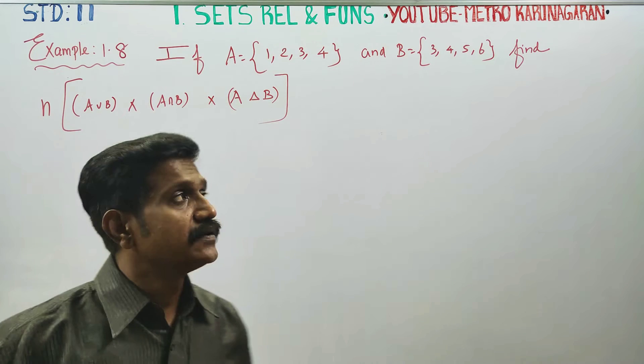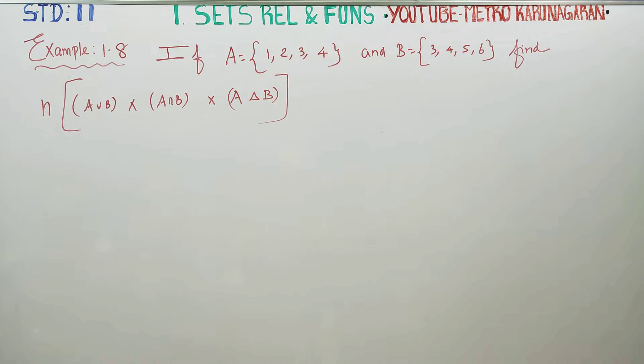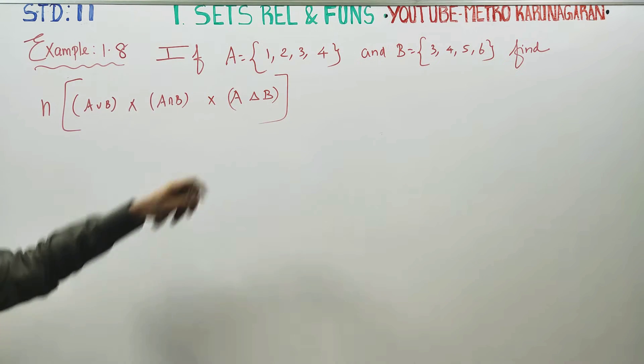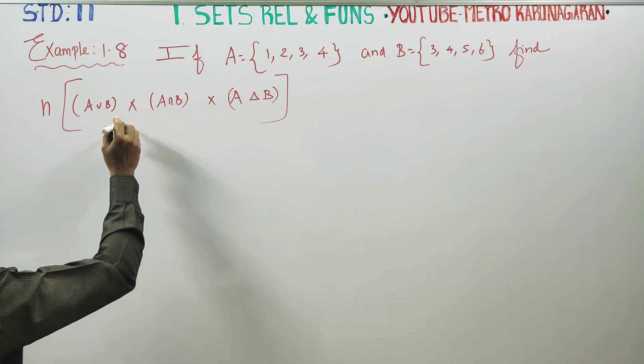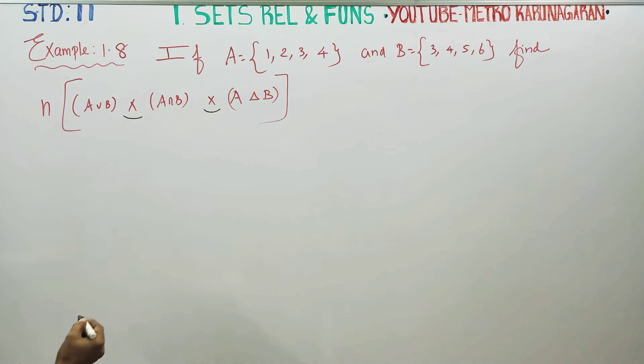In Example 1.8, if A is equal to... and B is equal to..., you have to find this. This is called Cartesian product or cross product. That is, how many elements we have to find.